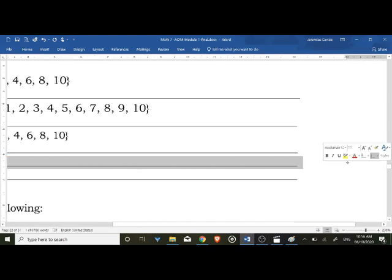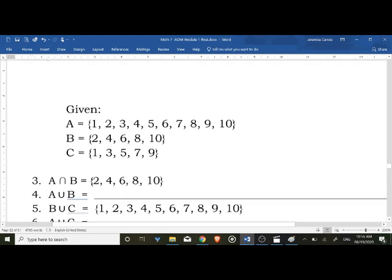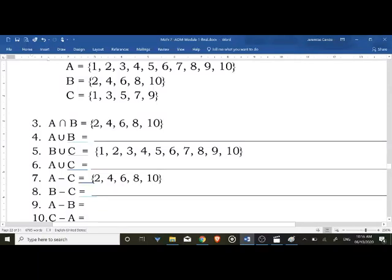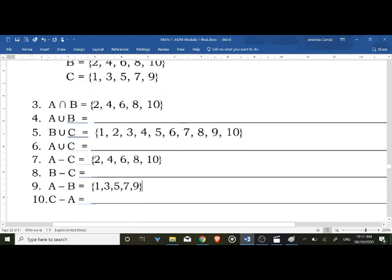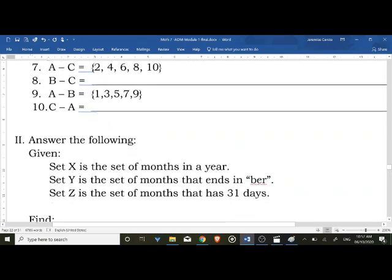Then you will answer number nine. Ito na po yung last item na ipapakita ko po for this activity. A minus B. Ang elements ni A kukunan daw ng common elements kay B. So si B composed of even numbers. So tatanggalan lang natin ng even numbers si A. So ang matitira ni A are the odd numbers: one, three, five, seven, nine. So yan po yung sagot sa difference of two sets A and B. Alright, so kayo na po bahala sa even numbers class.